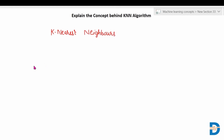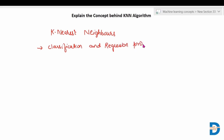KNN is used for both classification and regression types of problems. It is mainly a supervised machine learning algorithm. Let's see first how it works for a classification problem.